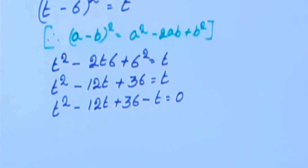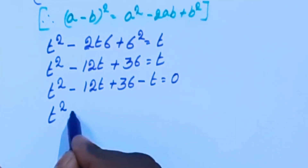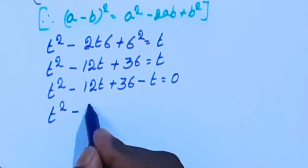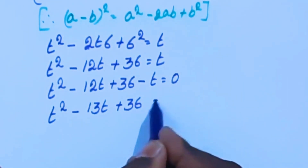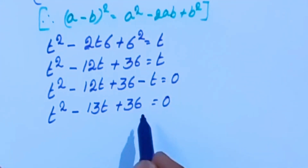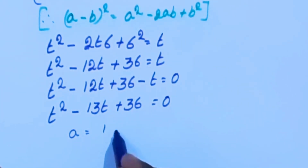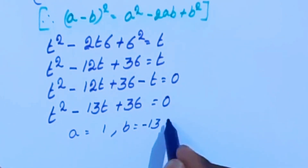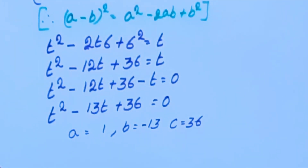Now combining like terms: t squared minus 12t and minus 1t gives minus 13t, plus 36 equals 0. Now we are going to apply the quadratic equation. Here a equals 1, b equals minus 13, c equals 36.